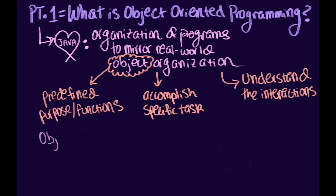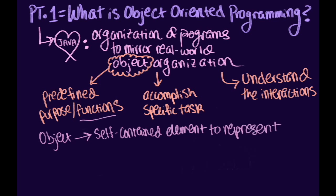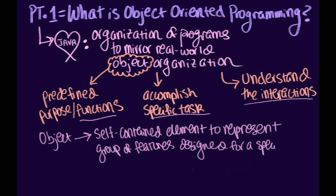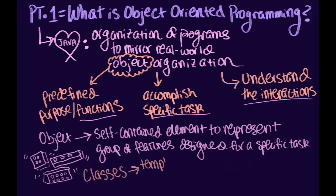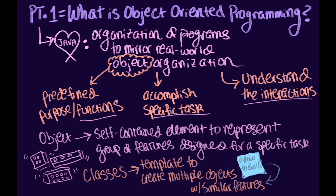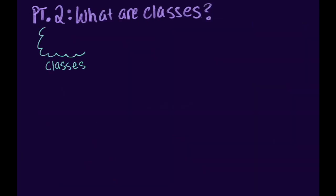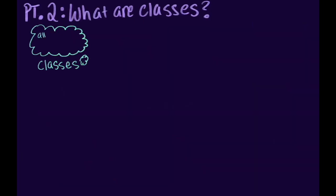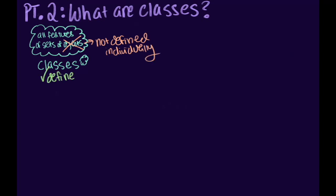An object can be defined as a self-contained element of a computer program that represents a related group of features and is designed to accomplish specific tasks. Classes in Java act as a template or blueprint to create multiple objects with similar features. Classes embody all features of a particular set of objects. When you write a program in an object-oriented language, you don't define individual objects — instead you define classes of objects.